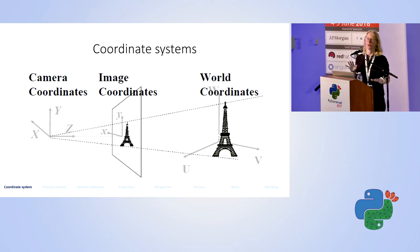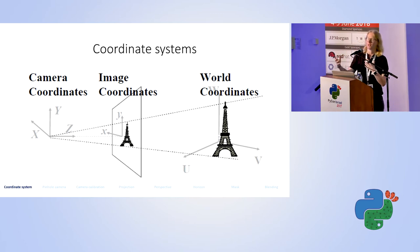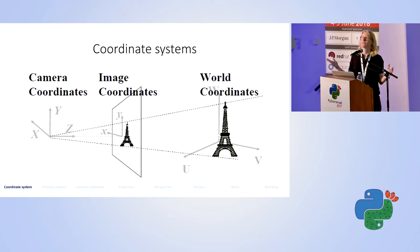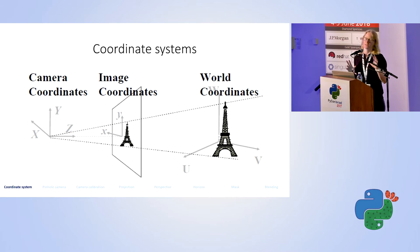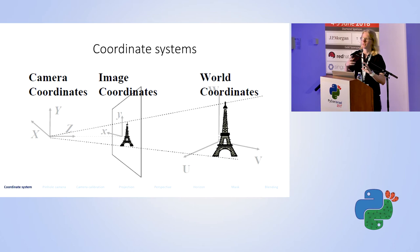Now I'll talk about coordinate systems, because it's very important when you try to understand where things are located in 3D and 2D. The first important coordinate system is the world coordinate system — it's a 3D coordinate system that describes the world around us. The second is the camera coordinate system, which is not necessarily the same, and the camera is the zero point of this system. The third is the image plane, which is 2D, and the transformation from 3D to 2D is called projection.